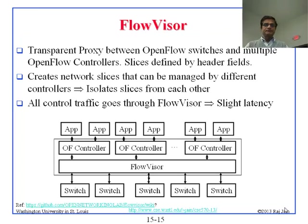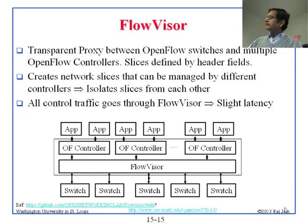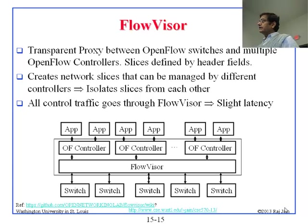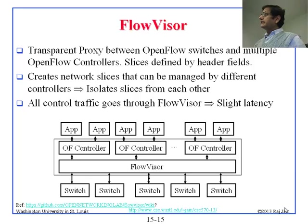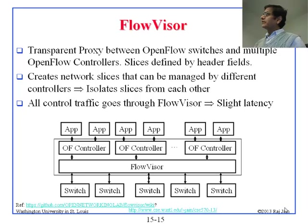First is FlowVisor. FlowVisor fits directly below the controllers. You could have many controllers running — different controllers theoretically. So let's say you have many different tenants and each of them has a controller. They can talk to the FlowVisor, and the FlowVisor will talk to the switches. By doing this, FlowVisor makes the whole thing multi-tenant, so the controllers don't have to worry about virtualizing.